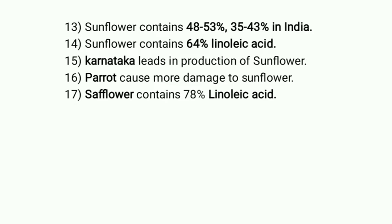The next crop to discuss is sunflower. The order of important oil crops is groundnut, then soybean, then sunflower. Sunflower contains 48–53% of oil, but in India it contains 35–43% of oil. Sunflower contains 64% of linoleic acid, but the highest percentage of linoleic acid is contained by safflower, followed by sunflower.